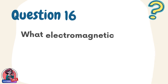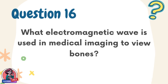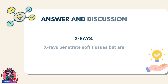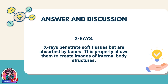Question 16. What electromagnetic wave is used in medical imaging to view bones? Answer: x-rays. X-rays penetrate soft tissues but are absorbed by bones. This property allows them to create images of internal body structures.